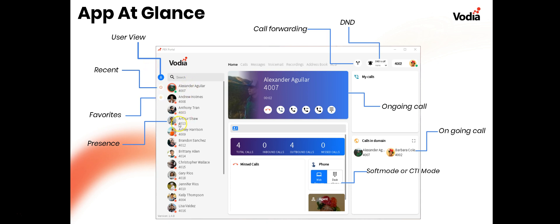You've also got presence indicators — these little dots. Red dots mean the user is not available. A green dot means available for everything. There's also a blue dot that may show up, which means the user is registered to a phone but not registered on the app.